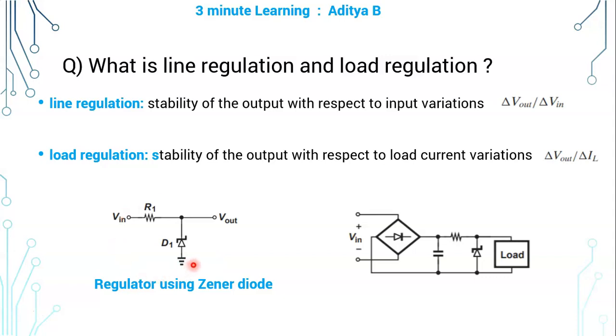This is a regulator using Zener diode, simple circuit. If you see, this is the actual circuit wherein this is the rectifier which converts alternating current into pulsating DC. This is the smoothing capacitor filter which converts pulsating DC into fluctuating DC.